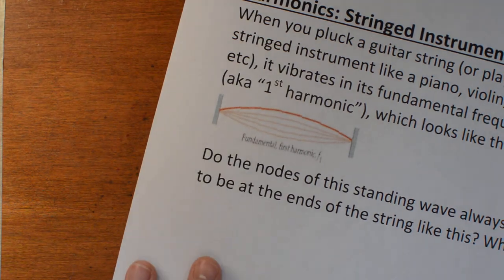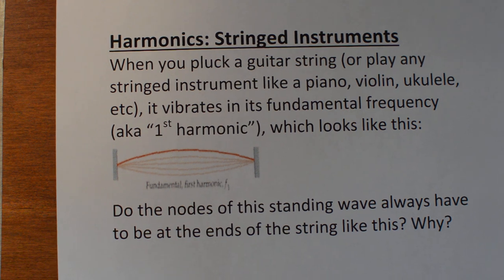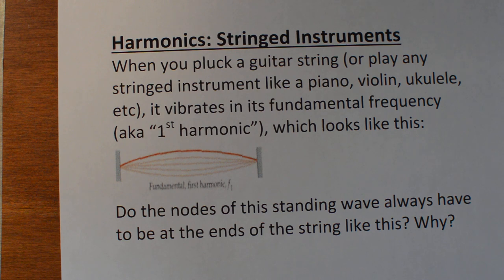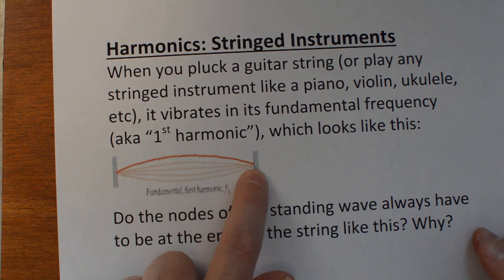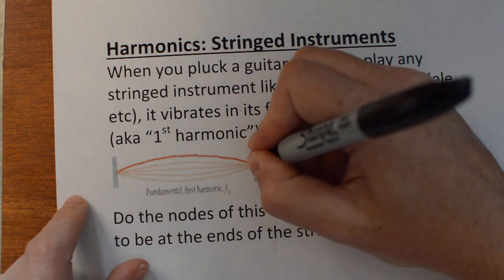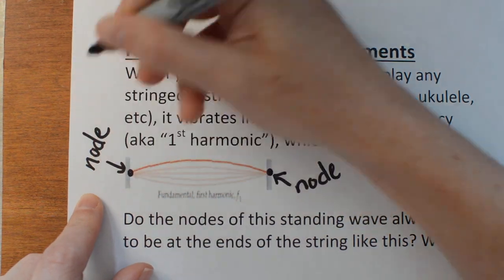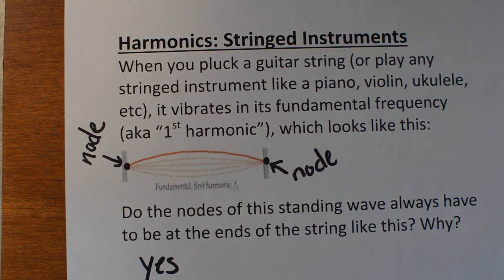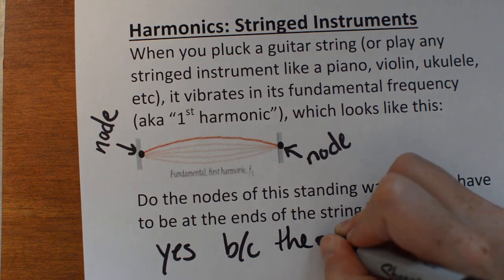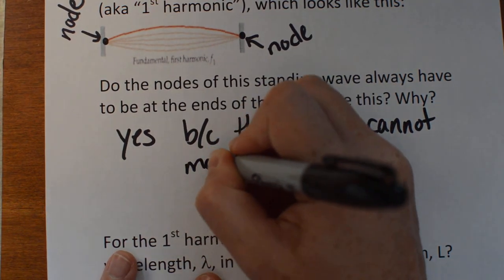Let's look at stringed instruments first — guitar, piano, violin, ukulele, all of those. We'll bring a few instruments into class and play around with them to see how standing waves work. When you pluck a guitar string, it's going to vibrate the most in the middle of the string and won't vibrate at all at the ends. So these ends are going to be nodes. Will those ends always be nodes? Yes, because they're literally tied down — the string can't move there. Those ends will always be nodes because the string cannot move at the ends.